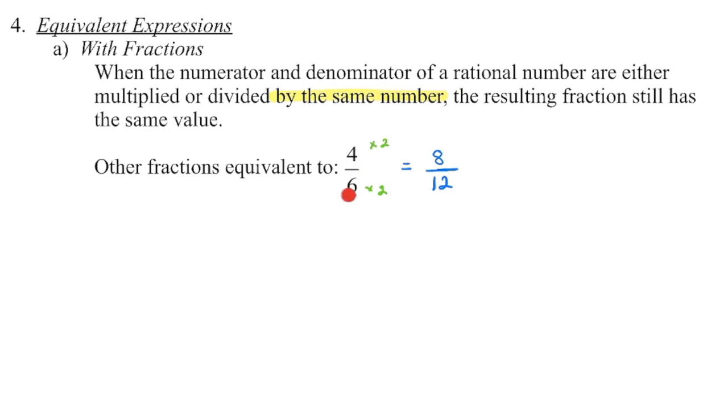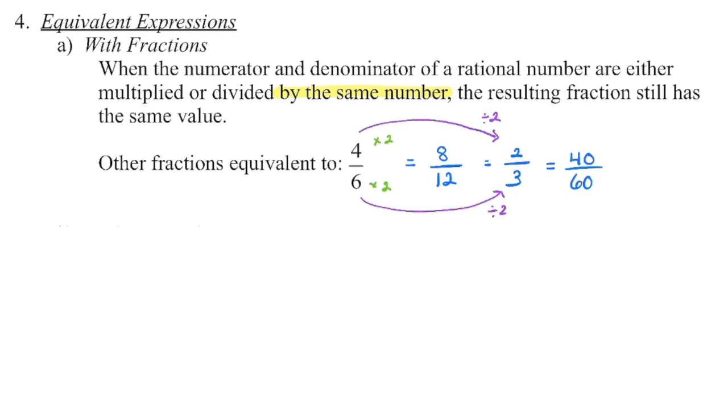So what number could we divide both four and six by? Well, if we divide each by two, we can see that two thirds is also going to be equivalent. Or we could multiply the numerator by 10 to get 40, multiply the denominator by 10 to get 60. As long as we are multiplying or dividing the numerator and denominator by the same number, we will produce an equivalent fraction.